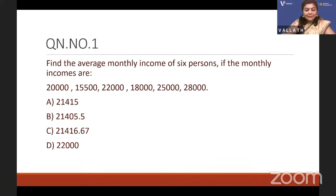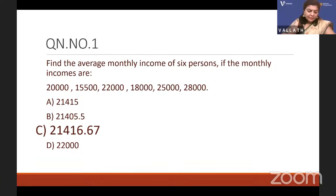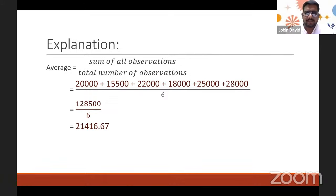The answer is 21,416.67. The explanation: average = sum of all observations divided by total number of observations. That is the basic formula. Take the sum of all six incomes — you get 1,28,500 — and divide by 6. You get 21,416.67 rupees.